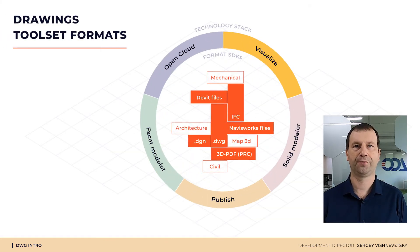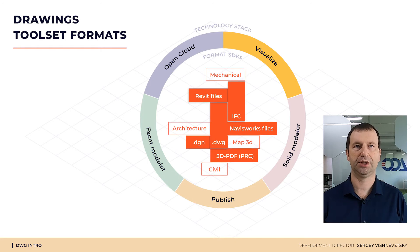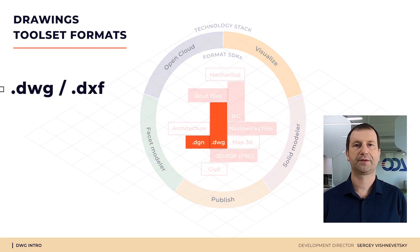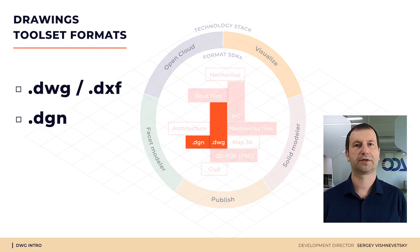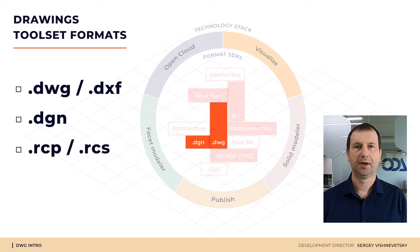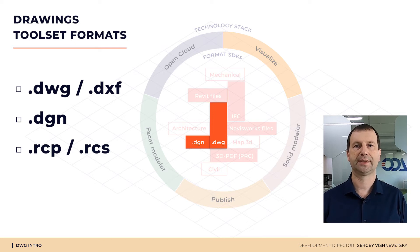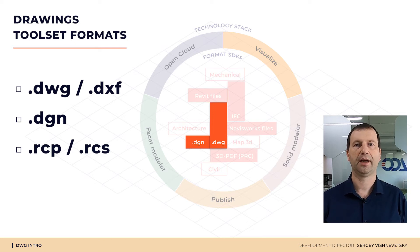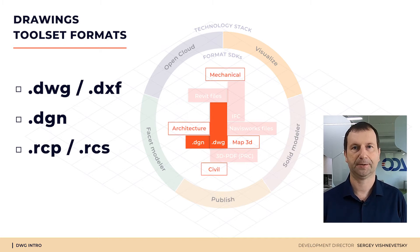By now it includes support for DWG drawings files from Autodesk, DGN drawings files from Bentley Systems, RPC and Point Cloud files for Autodesk Recap software. It also includes a set of DWG vertical extensions for architecture, civil, map, and mechanical.